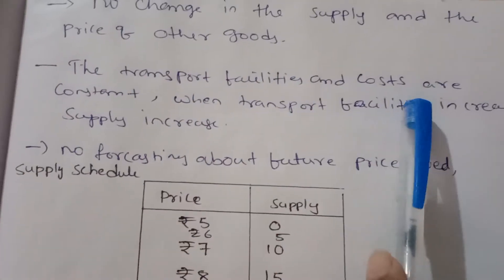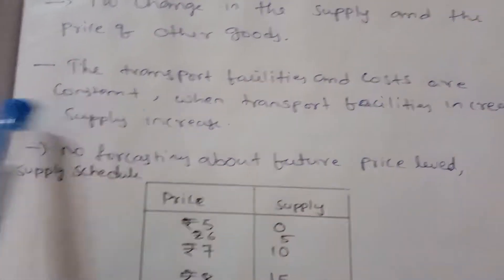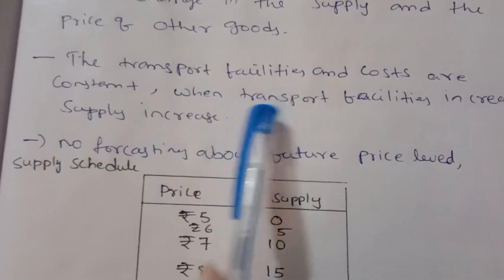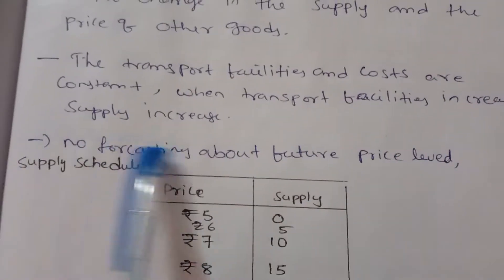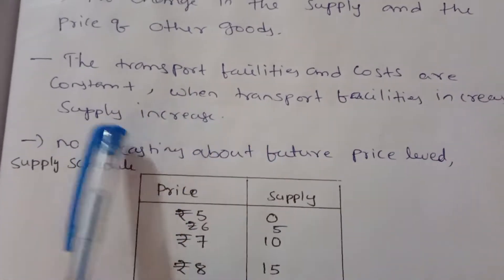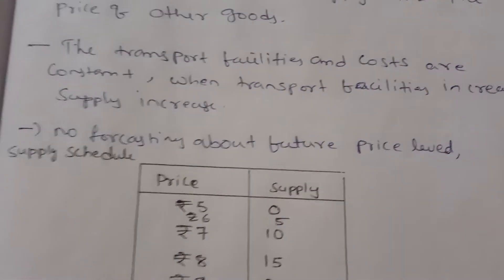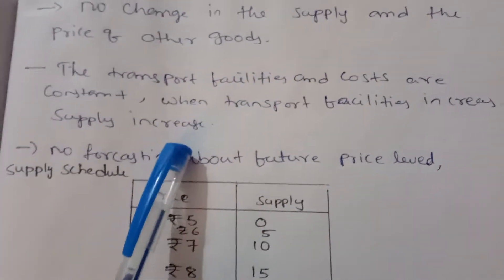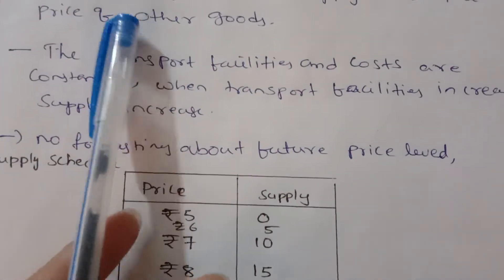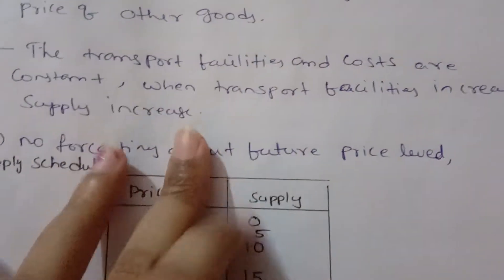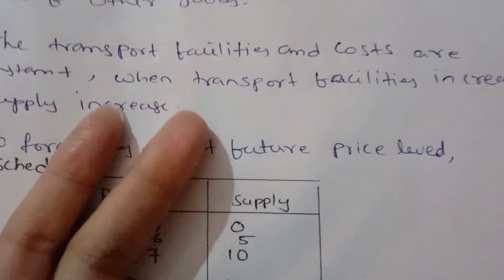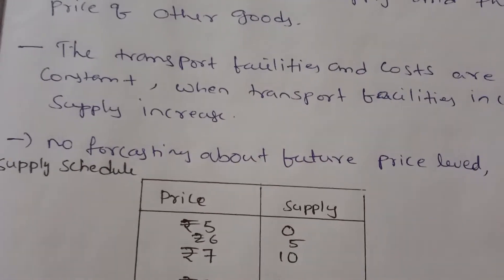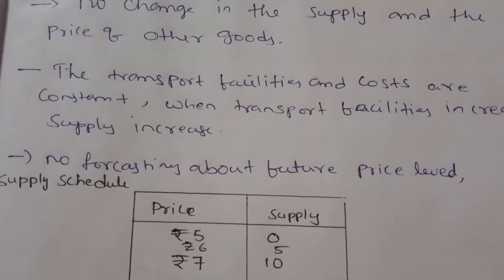The transport facilities and costs are constant. When transport facilities increase, supply also increases.